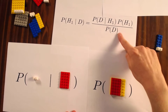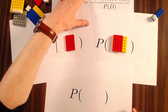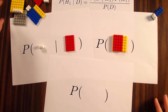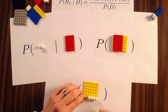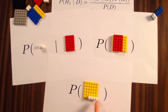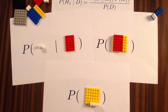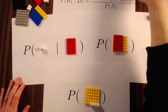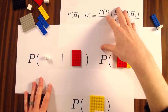The probability of the data is the last element we need. The probability of the data equals the probability of the data regardless of the hypothesis. Therefore, the probability of the data equals 4 over 36. Now we have everything that we need to calculate the probability of the hypothesis given the data that we have.